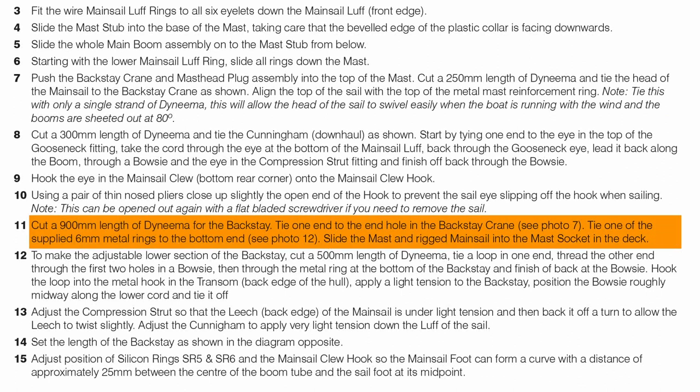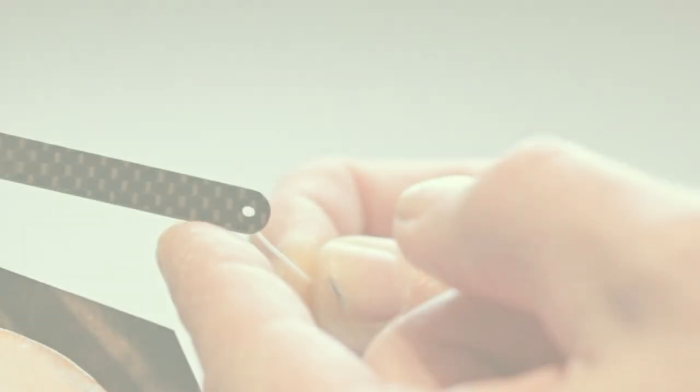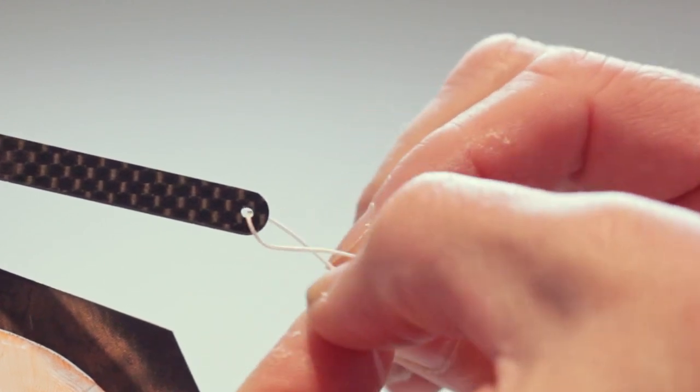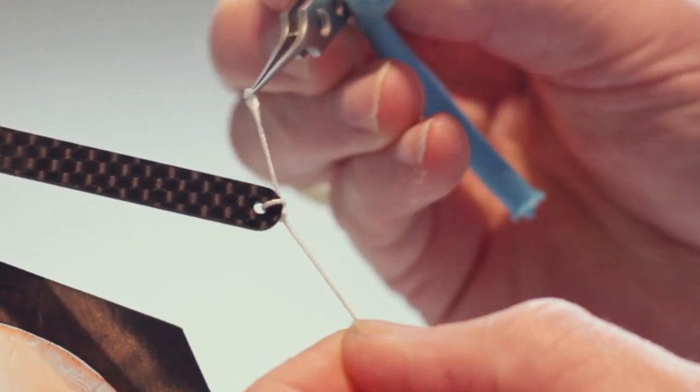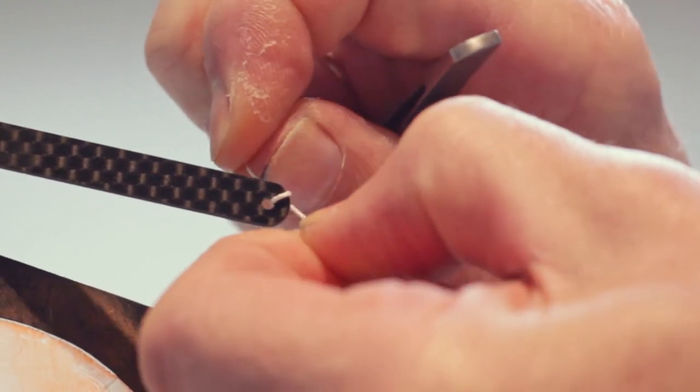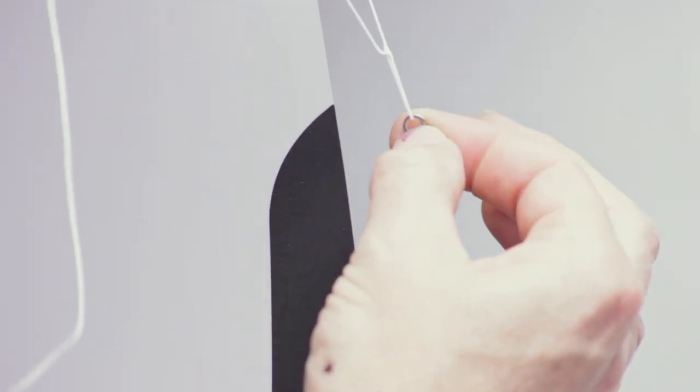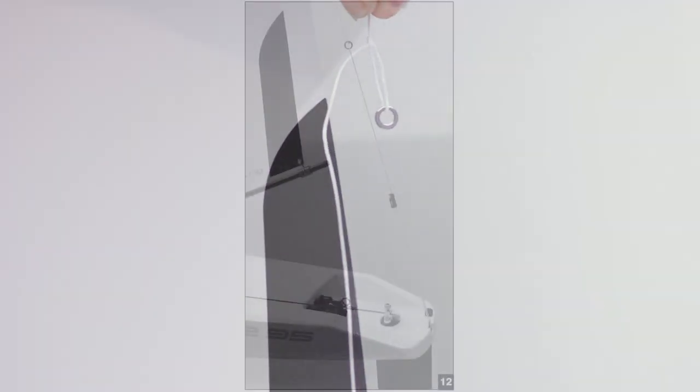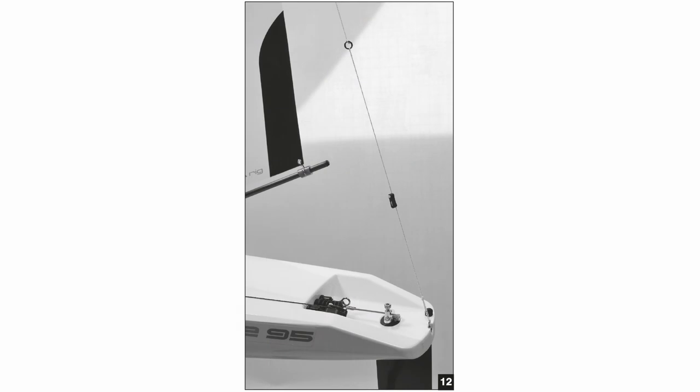Now it's time to make the backstay tensioner. Cut a length of dyneema that will span the full height of the mainsail. Tie one end to the last hole at the aft end of the mast crane. Tie a metal ring on the other end of the dyneema so when at rest, the ring is level with the top of the reinforcement patch on the mainsail. This is not a crucial measurement, so it's okay to be slightly above or below this level.